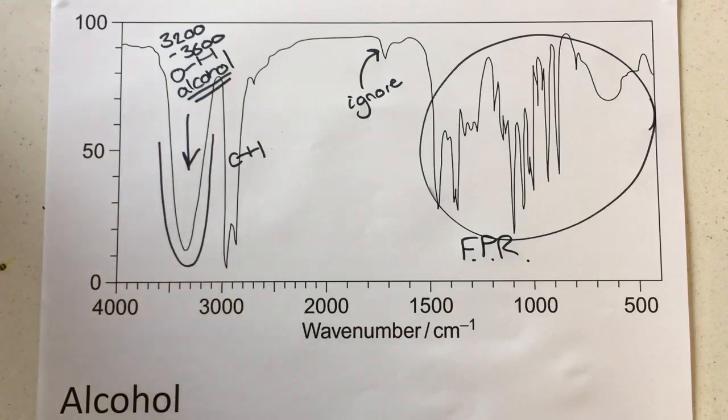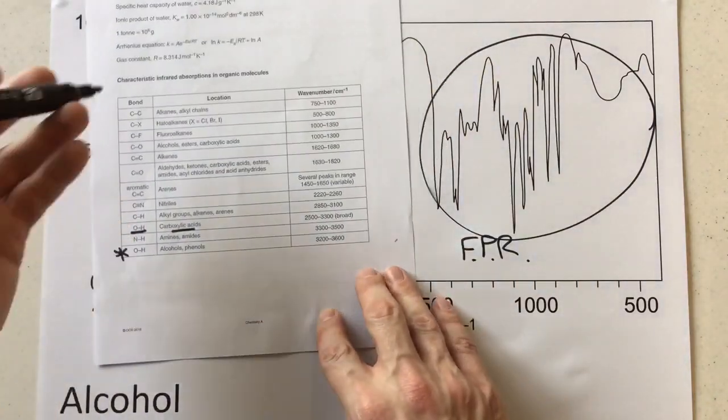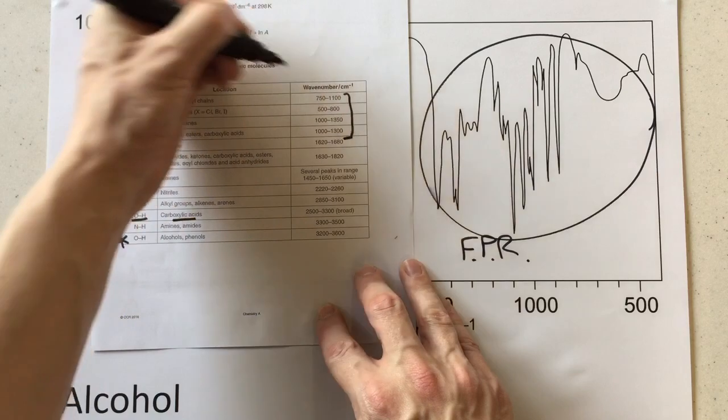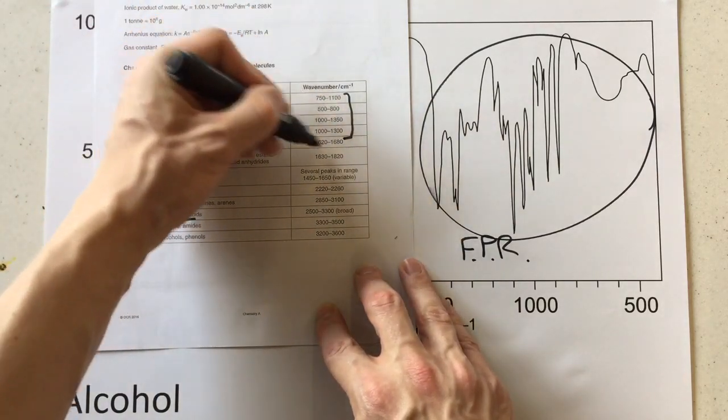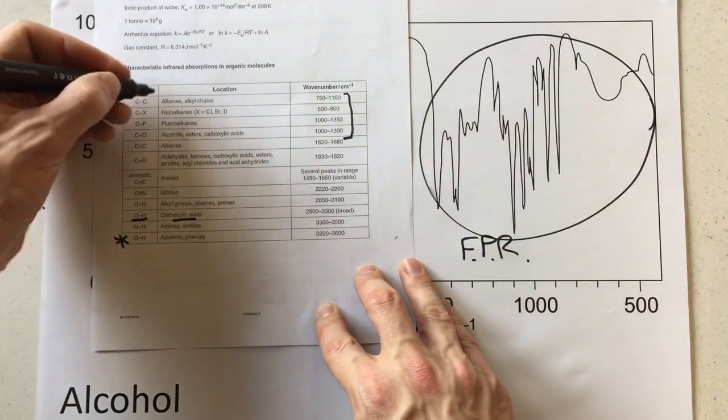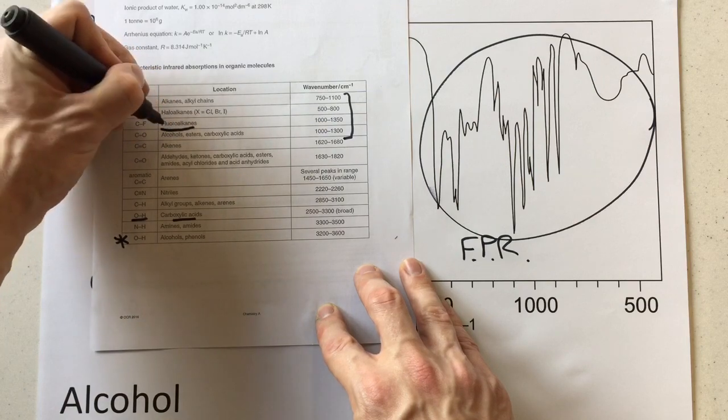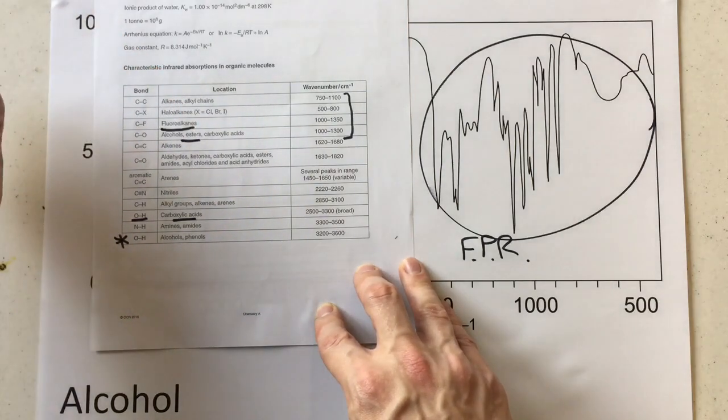However, what they might do—because they have actually got the fingerprint region values labeled up on here—they may ask you to quote a peak that you would expect to find for fluoroalkanes or perhaps an ester, something like that.